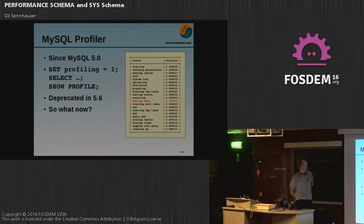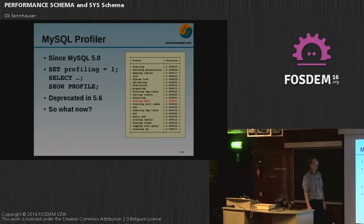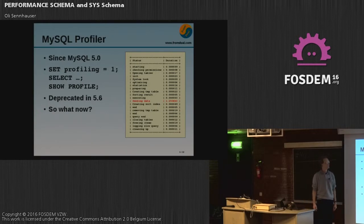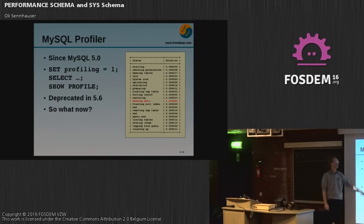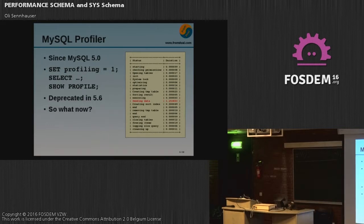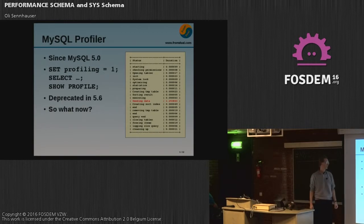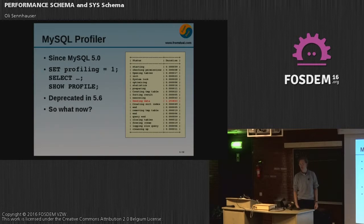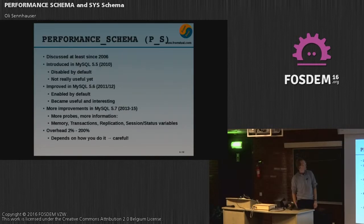That's basically the idea of the performance schema. MySQL profiler, maybe you know about it, existed since MySQL 5.0. When I first saw it I thought, that's really what I want. I tried it out immediately. It's quite simple — set profiling equals 1, then execute your query, and then do a show profile and you get output. That's more or less what I want, and I see most of the time is lost in sending data. So my enthusiasm was not that big anymore — it did not really help answer my problem. And then in MySQL 5.6, show profile was deprecated. So what's now? Performance schema.